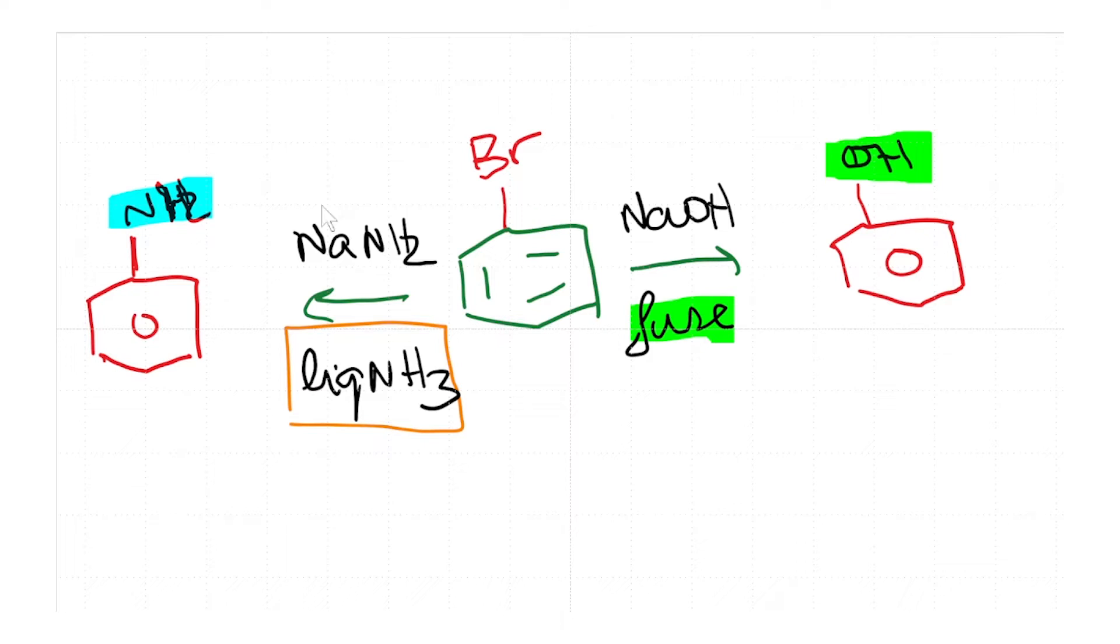Similarly, when you take bromobenzene and react it with sodium amide in liquid ammonia, the product here is aniline. So this reaction can occur but you need extreme reaction conditions for it to happen.